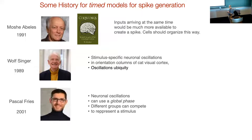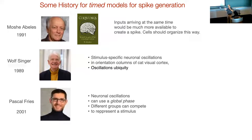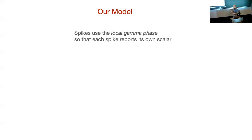Pascal Fries is a disciple of Singer and studies gamma oscillations in networks. His work uses global phase — if you have two oscillators, you move their phase but must do it across the entire network. What makes our work different is that gamma frequencies have a local phase. Each spike has its own private phase, its own private space. That's the key distinction.